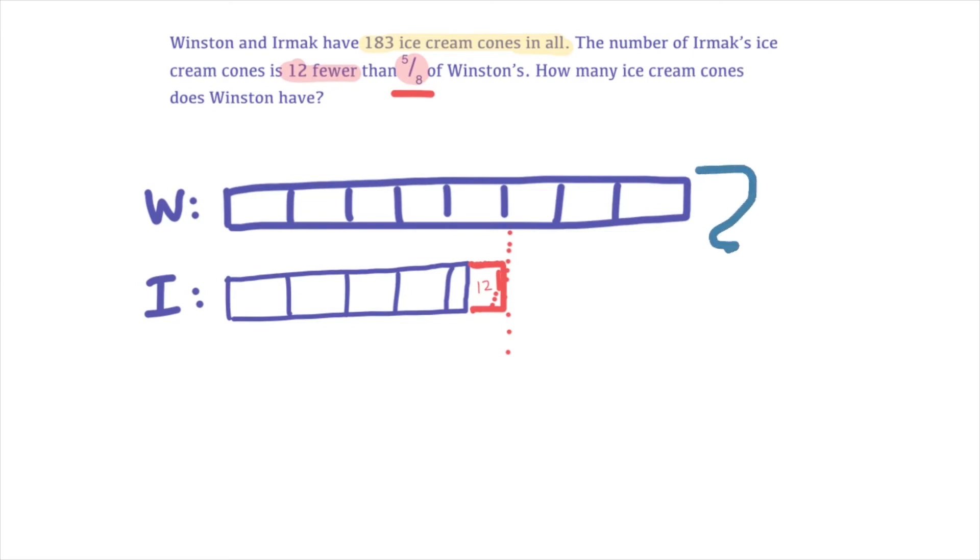And I've now got all my blocks that I can work with. So now remember, together, this is 183. That's not including these 12 that are missing. But I'm going to pretend that she's got those. I'm going to give those just so I can have an even number of blocks. So I'm going to add that together. And if I did give those 12, I would have 195.